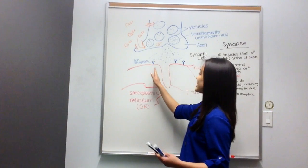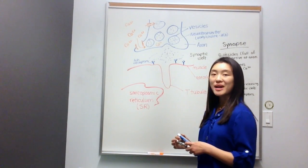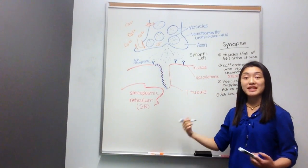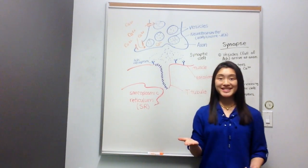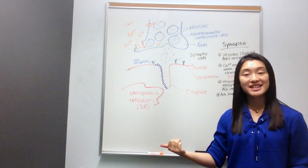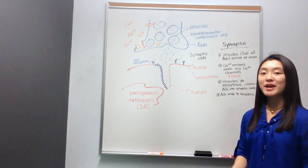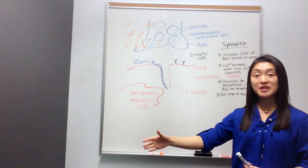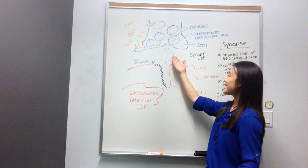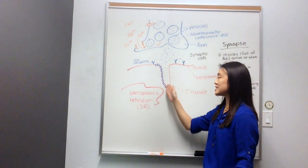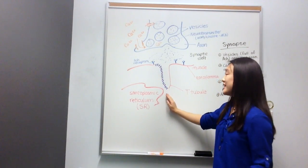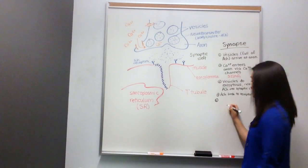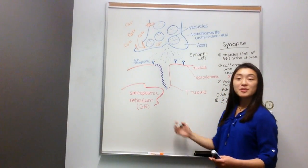The acetylcholine remains within the receptor while the signal travels down the T-tubule. You can think of it this way: say I give chocolates to a friend and ask them to say hello to another friend. The chocolate stays with the first friend, but the message continues on. Similarly, the acetylcholine remains in the receptor while the signal travels down the T-tubule. Step five: signal travels down T-tubule. The signal progresses down the T-tubule until it reaches the sarcoplasmic reticulum.